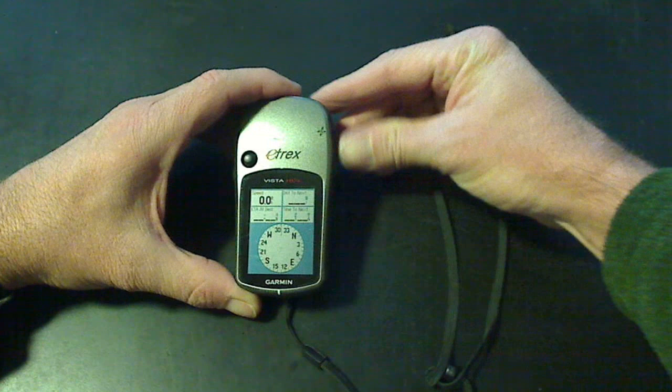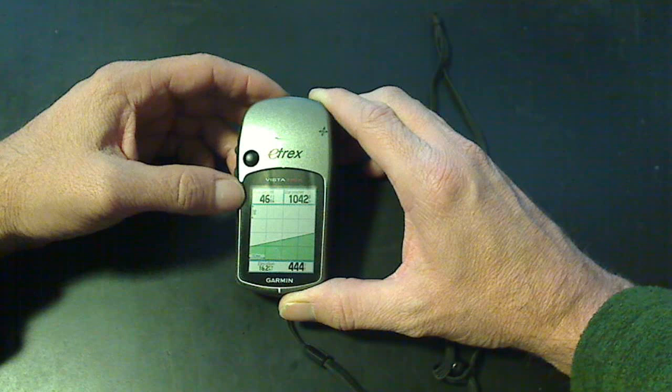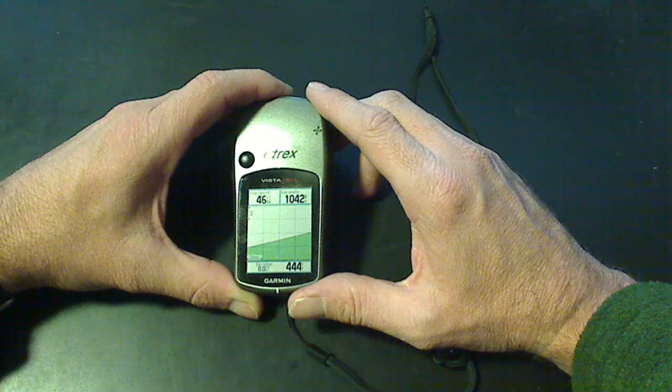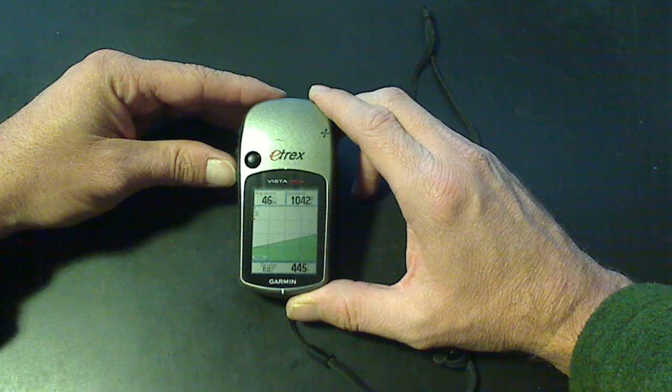The next page, that's going to be our altimeter page. It's going to track, in this case I have this GPS, my personal one set for my average descent, and I also have it set for the barometer so I can keep an eye on the weather. And then this is the elevation that I'm currently at right now at 445 feet.